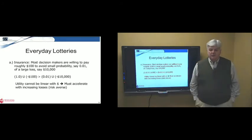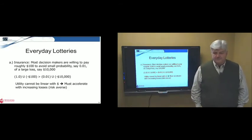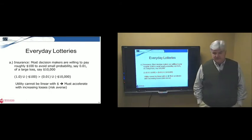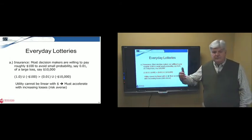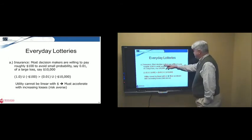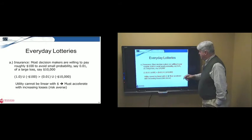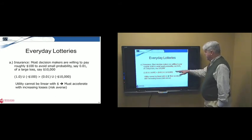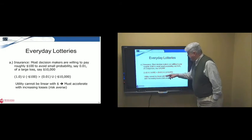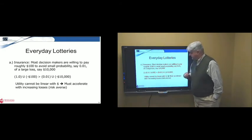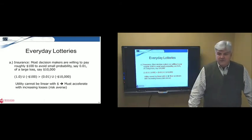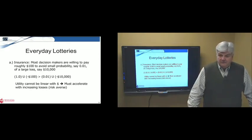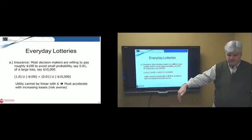So let's talk about what this general utility function for money should look like or tends to look like. Let's talk about some everyday lotteries that we play every day. These are not necessarily buying lottery tickets for your state lottery. These are things you do, gambles you take inherently. So most decision makers are willing to pay roughly $100 to avoid a small probability, say 0.01, of a large loss, say $10,000. So we put that into our function, and we basically say the utility cannot be linear. It must accelerate with increasing losses. In other words, people are risk-averse about losses. People are willing to pay a sure small amount, a sure loss, to avoid the risk of a very large loss. So as you'll see, that means the function will taper down.